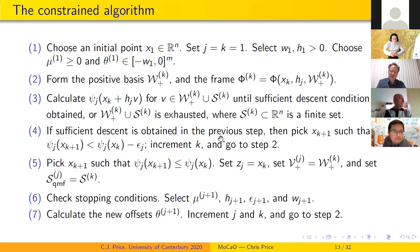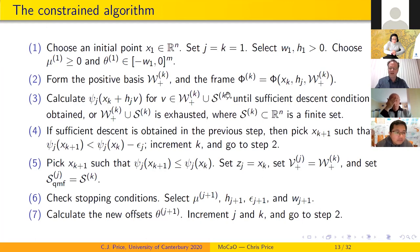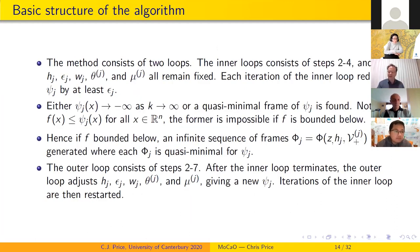Step 4 handles sufficient descent: if obtained, go back to step 2. Steps 2, 3, and 4 cycle until a quasi-minimal frame is reached. The extra set sk — additional directions beyond the positive basis — is where quasi-Newton steps, global direction searches, and similar enhancements are hidden. That's where most of the action for speed resides, while the frame center zj and bases vj provide the convergence guarantees.